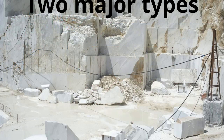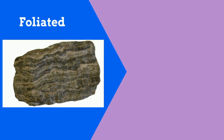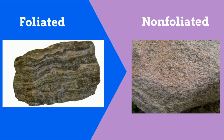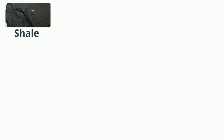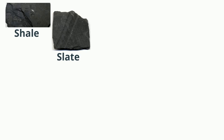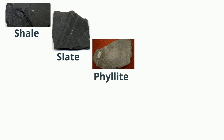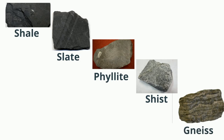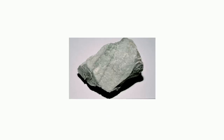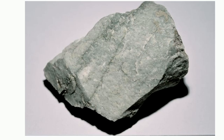Two major types of metamorphic rocks are foliated rocks, which have layers or bands, and non-foliated rocks, which do not have these layers or bands. A common example: shale morphs into slate, which morphs into phyllite, which transfers into schist that can morph into gneiss. Another common example: sandstone, when exposed to heat or pressure, morphs into quartzite, and limestone will morph into marble.